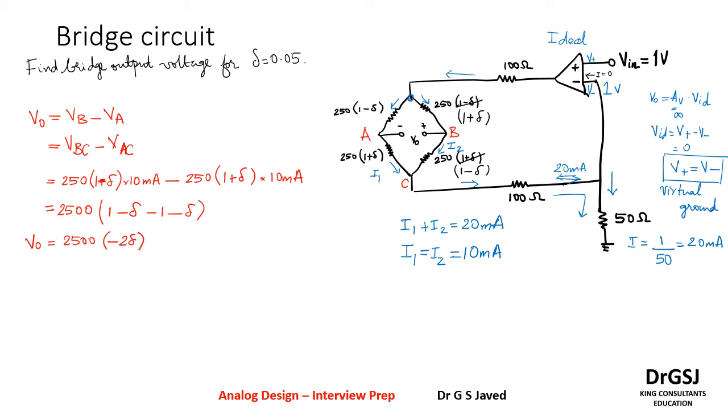Now that you have found out what is V_naught, for delta equal to 0.05, we get V_naught is equal to 2500 times minus 2 times delta value is 0.05, and this is in millivolt because here you have taken milliampere into ohm it is millivolt. So if you multiply this, this is minus 0.1 times 2500 into millivolt, so the V_naught effectively is minus 250 millivolt.